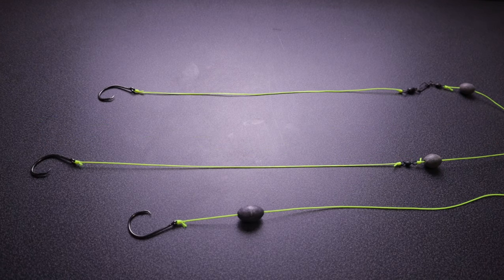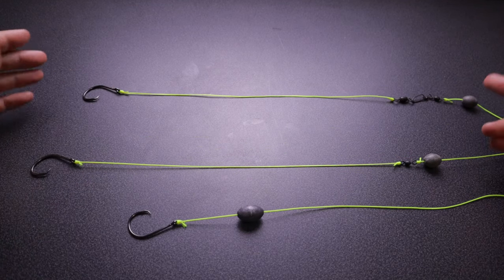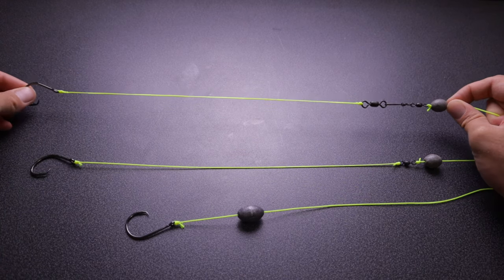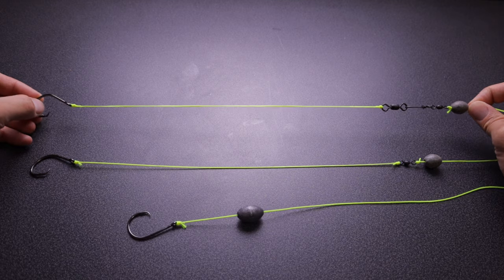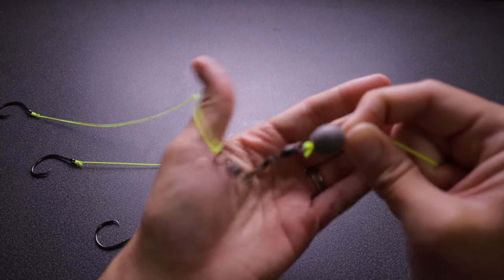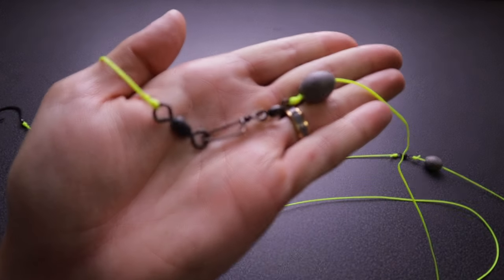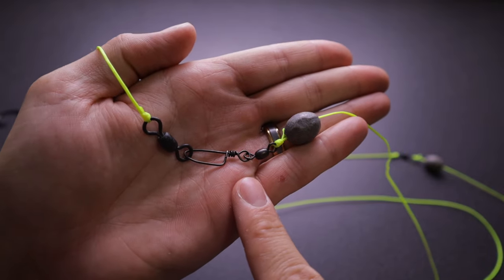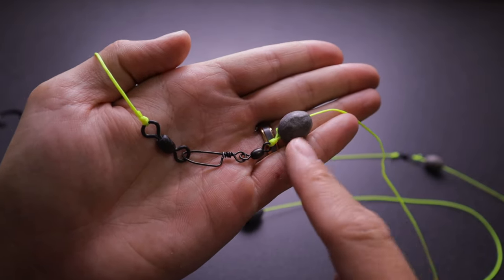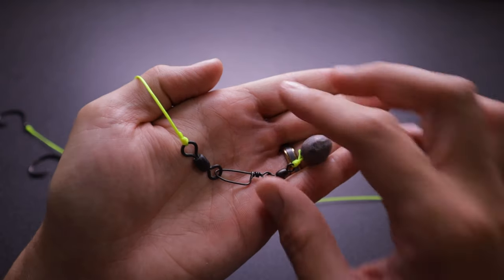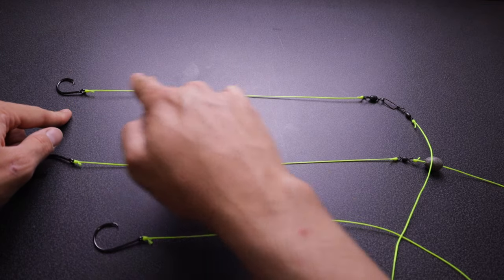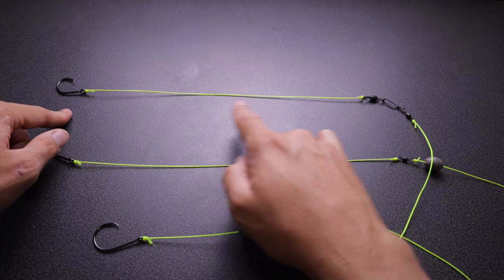Lastly, and probably the rig we use most often, is actually very similar to the fish finder rig. All it is is a fish finder rig, but instead of just a normal swivel, what we have is a snap swivel here tied below the weight. What this does is it allows us to make a bunch of rigs like this, which is just a hook, leader, and swivel.